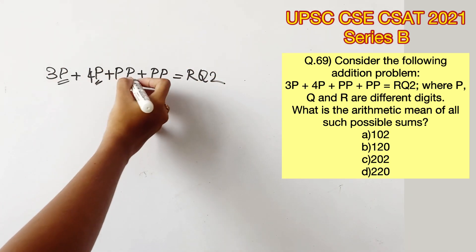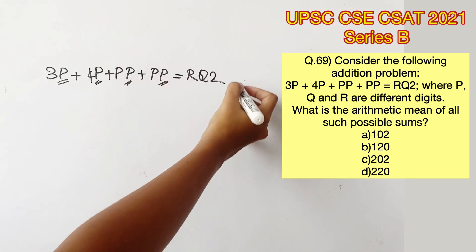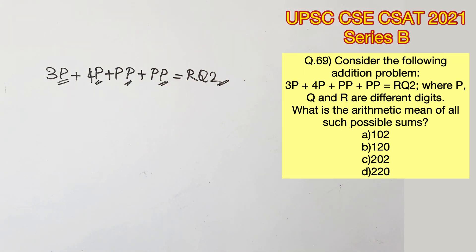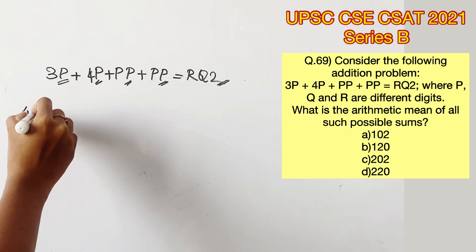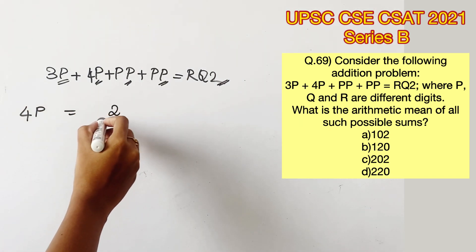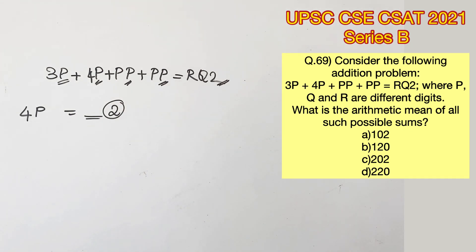If you notice the last digits of all these terms, it's exactly the same. From this, we can infer that adding a particular digit 4 times, we should get 2 in the unit's place. So adding P 4 times is nothing but multiplying P by 4. So we can say that 4 times P should give us a value that ends with 2.